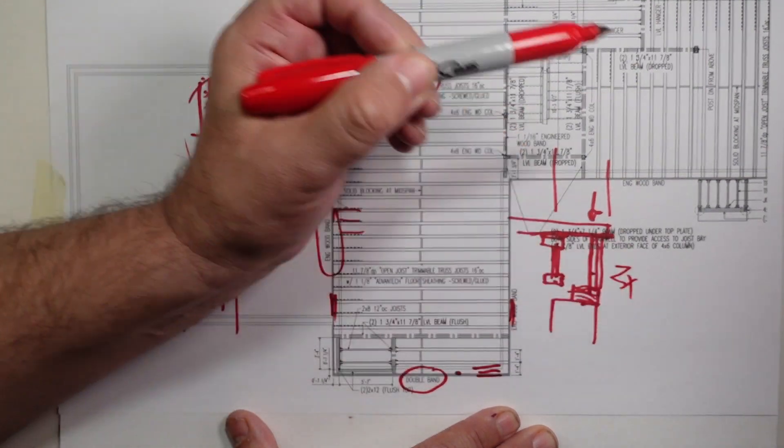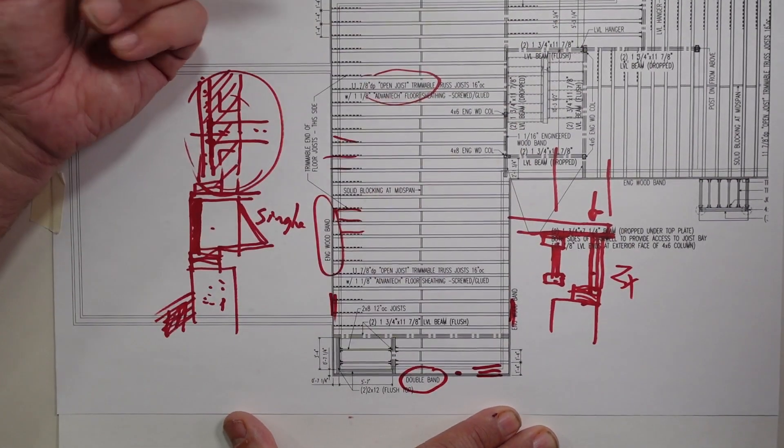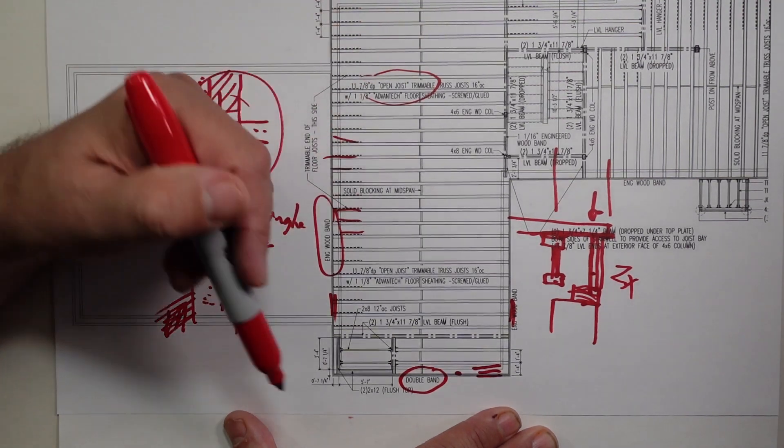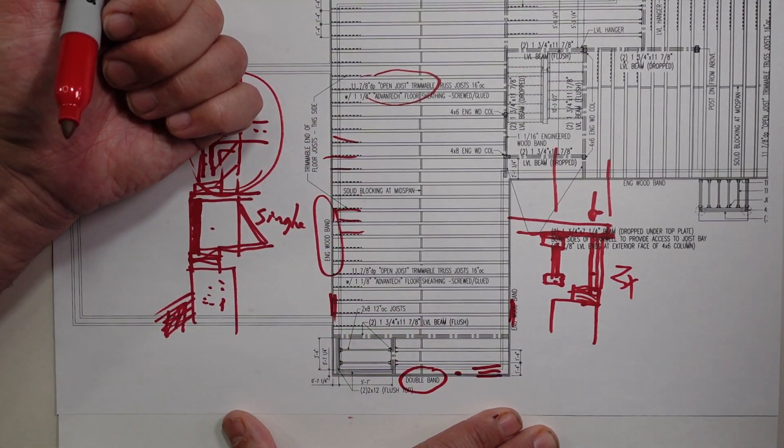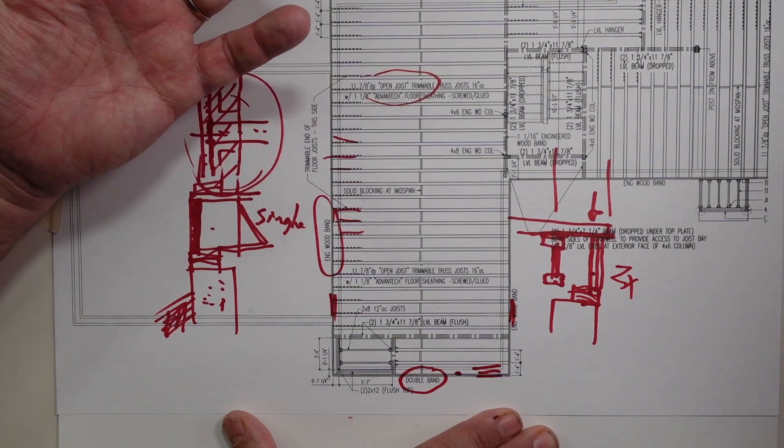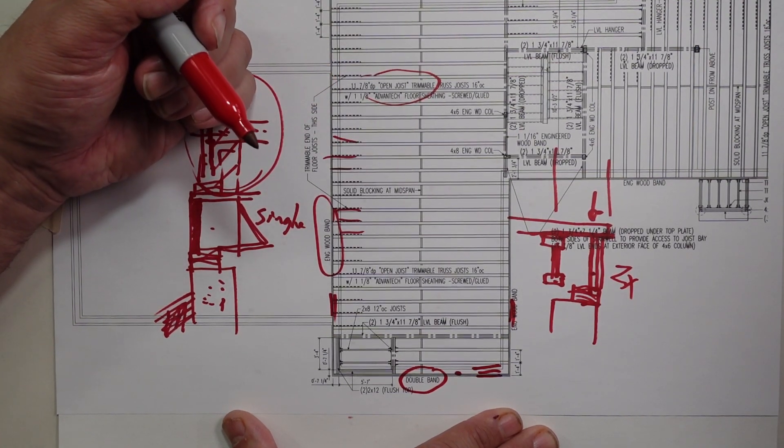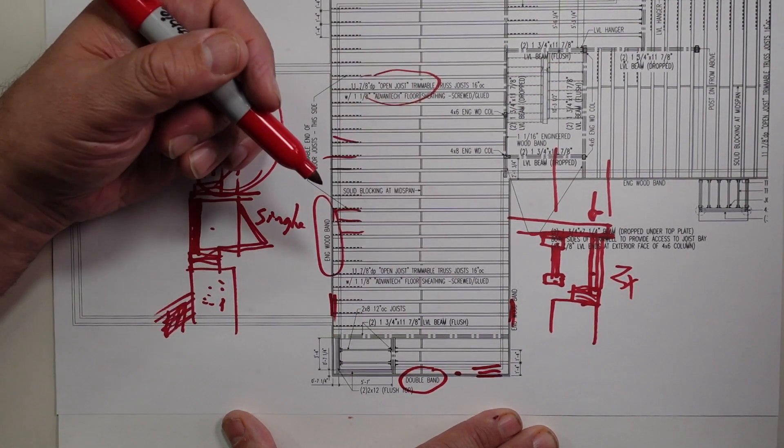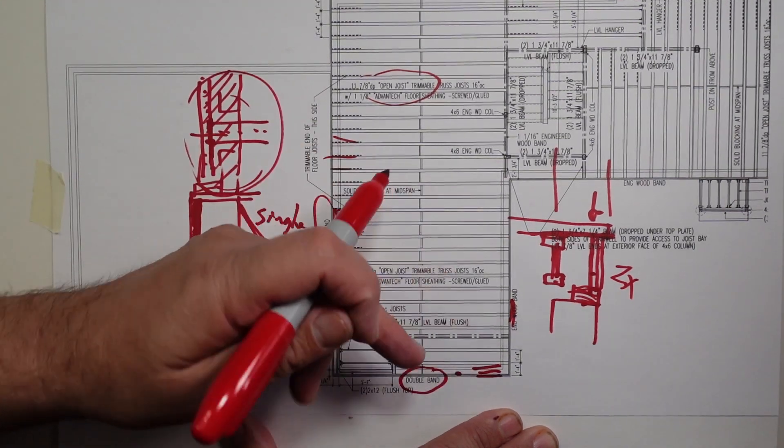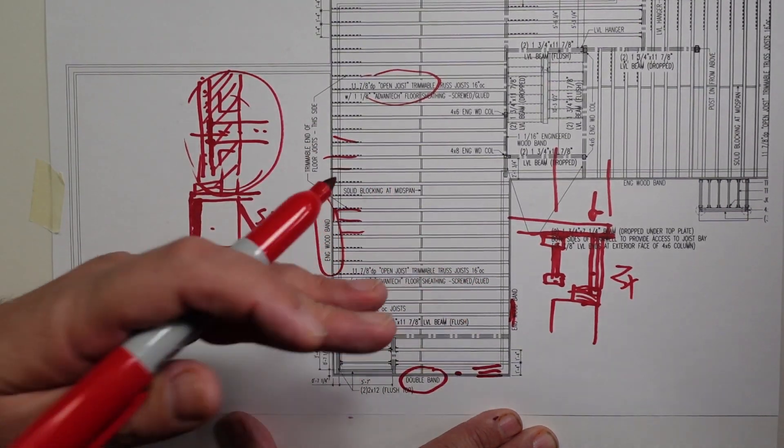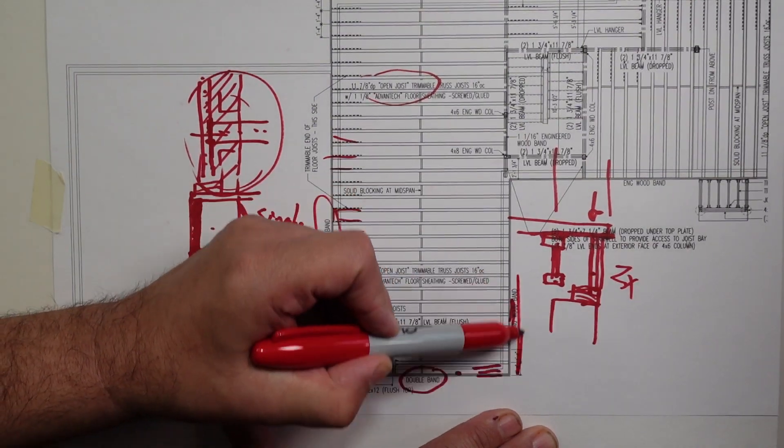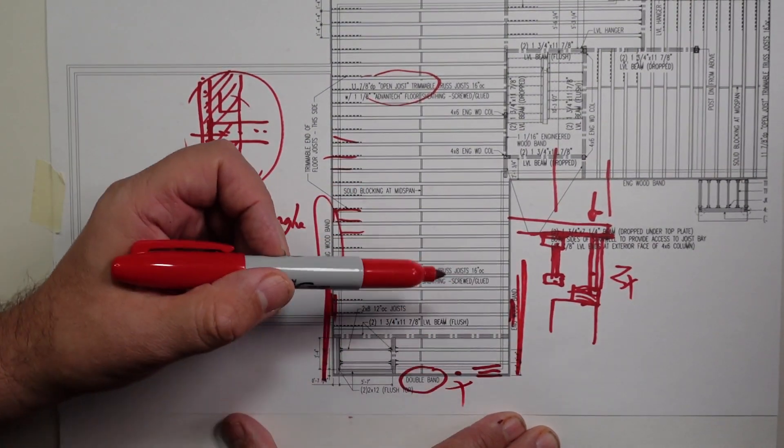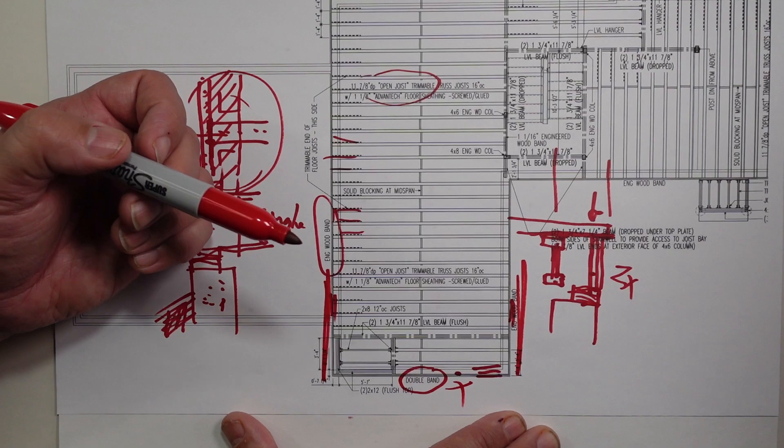So now we have 2x in bearing capacity. Now, certainly that single band joist is most likely enough in most situations to be able to handle the load that's coming down, especially when you're at the edge of a building like this. It's typically the gable end. So roof load is coming down to this wall and this wall, and there is no roof load along that plane.